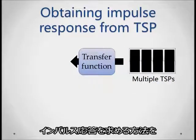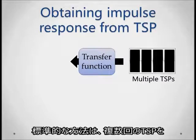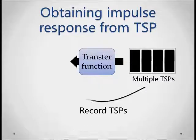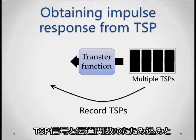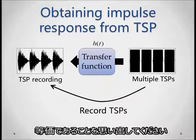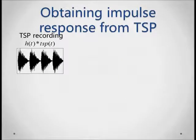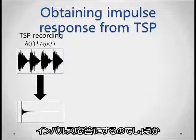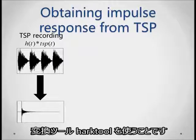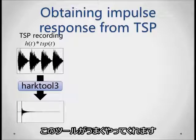Now let's see how to obtain an impulse response from a TSP. The standard method is to play multiple TSPs and record them. Remember, the recording can be considered a convolution of the transfer function and the TSP. To convert these TSP recordings into an impulse response, we use the HARC software, HARC Tool 3, which does this conversion process for us.